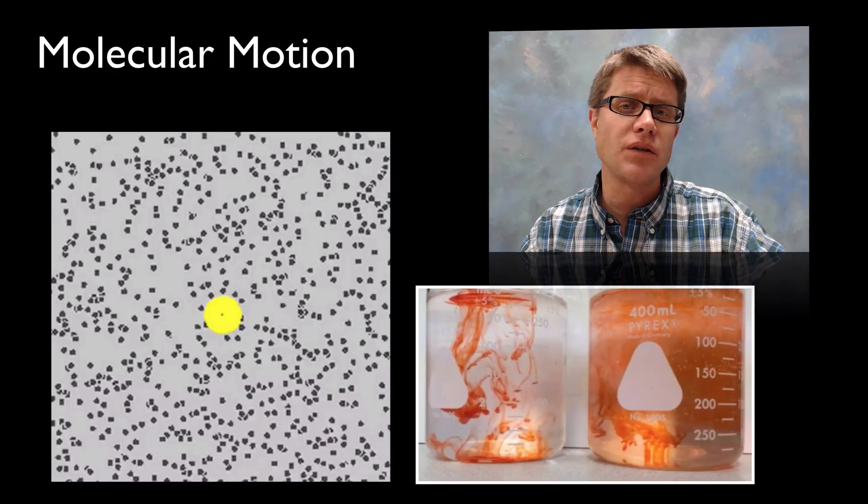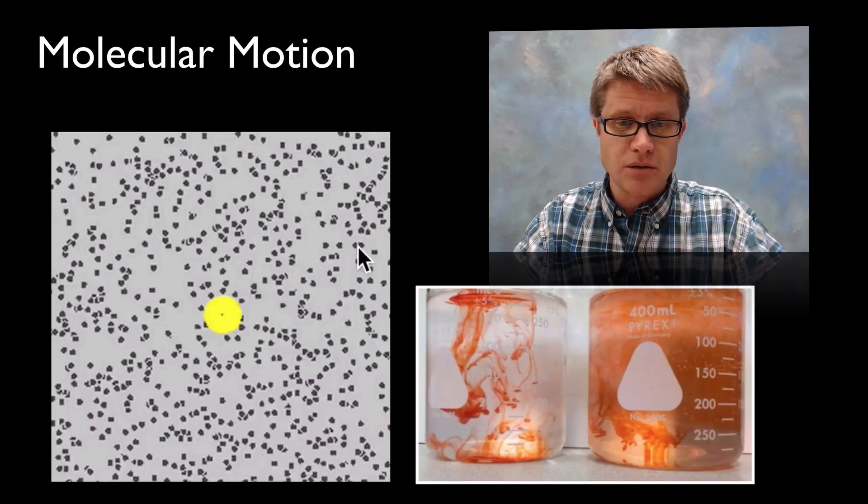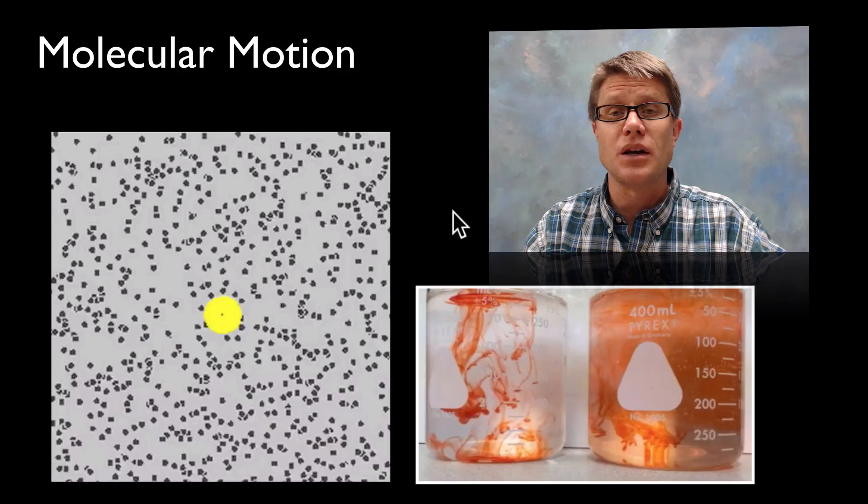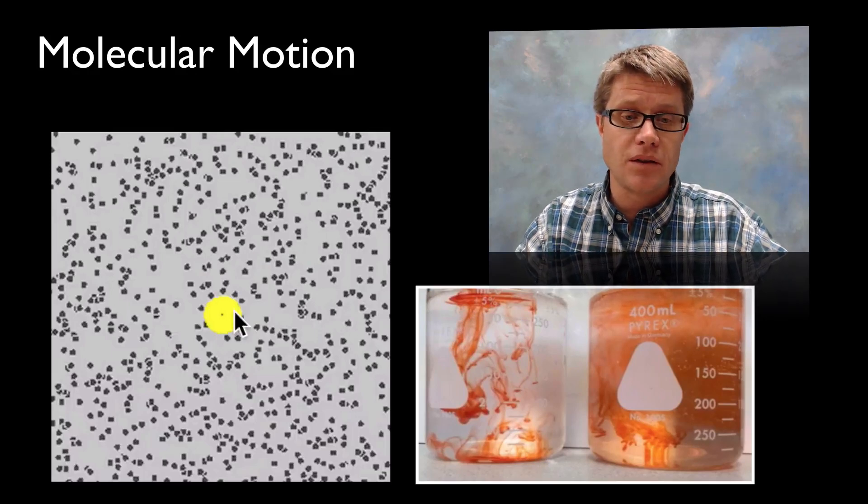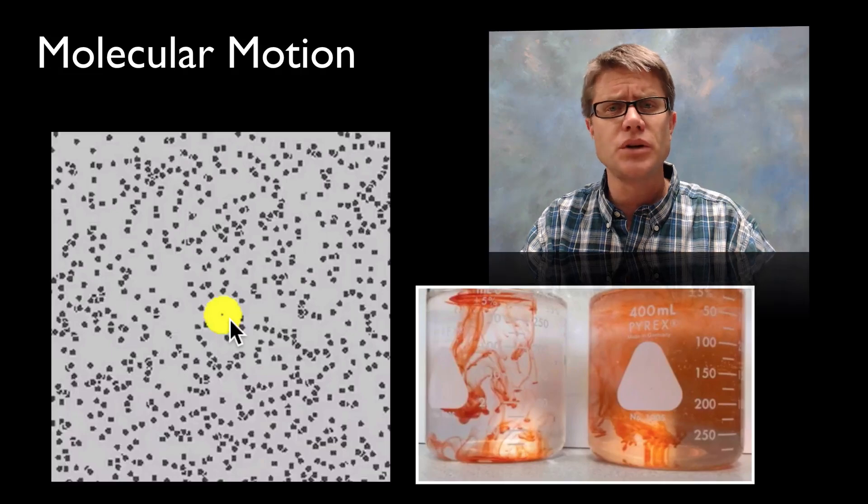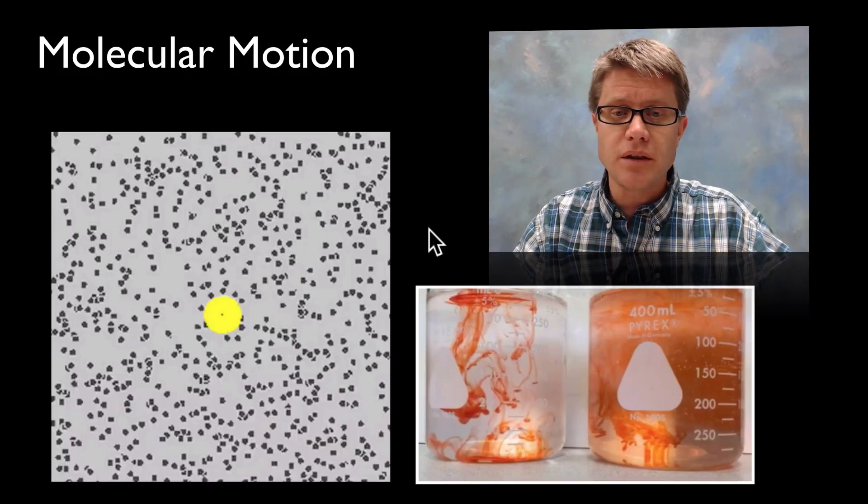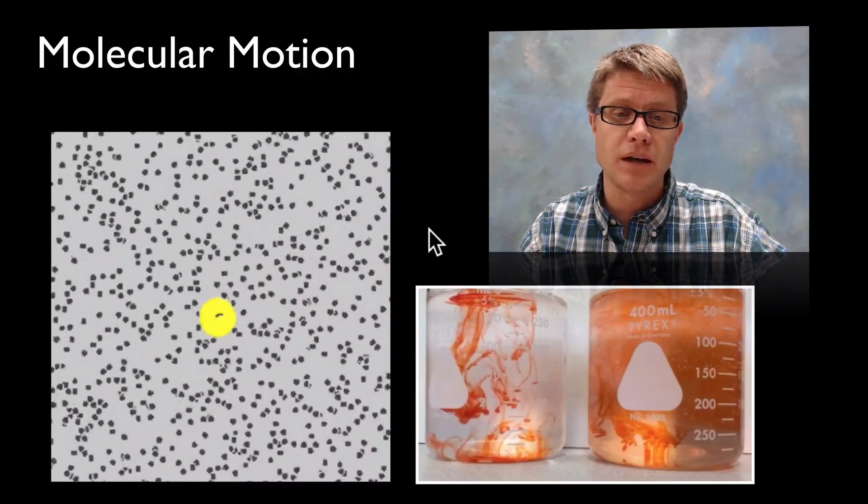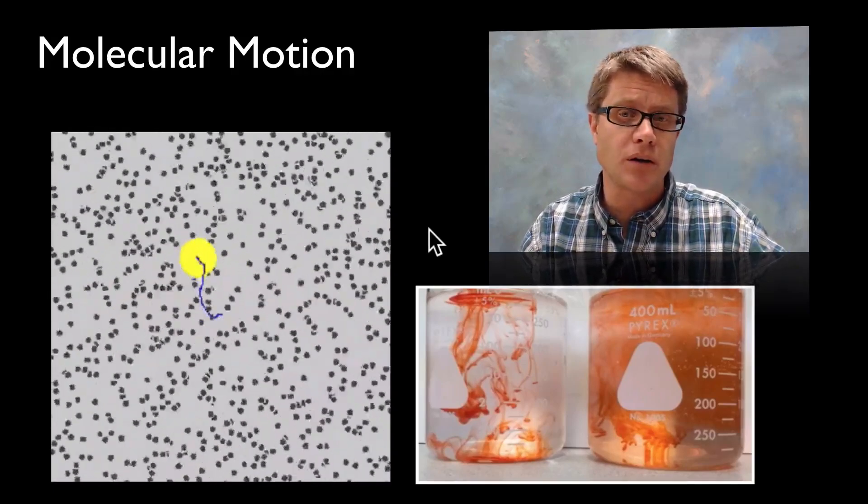Well everything is in motion. Everything is in molecular motion. And so in this diagram right here we've got these particles. You can think of them representing the water molecules. And then we have this particle, this large one, which you can think of represents one large food coloring molecule. And so if we run those in molecular motion we'll find that they're all moving around really quickly. And as they do that they're bumping on that particle.